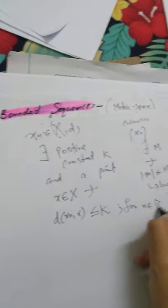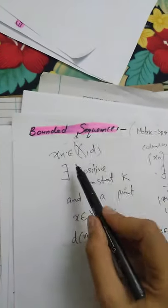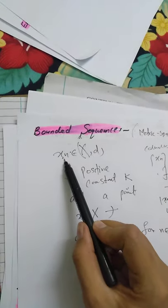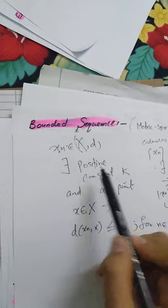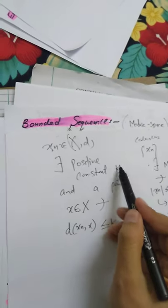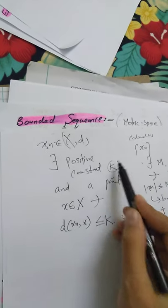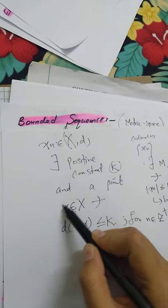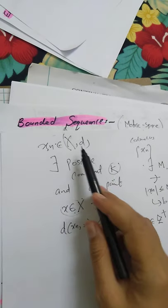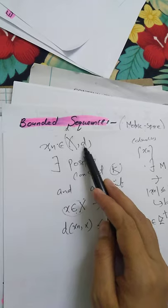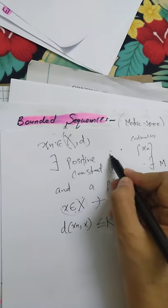Now here we can see that xn is bounded when there will be a positive constant and a point x belonging to X. This point I have to be because space is a metric space and there is a function distance. So distance we always do between two points.